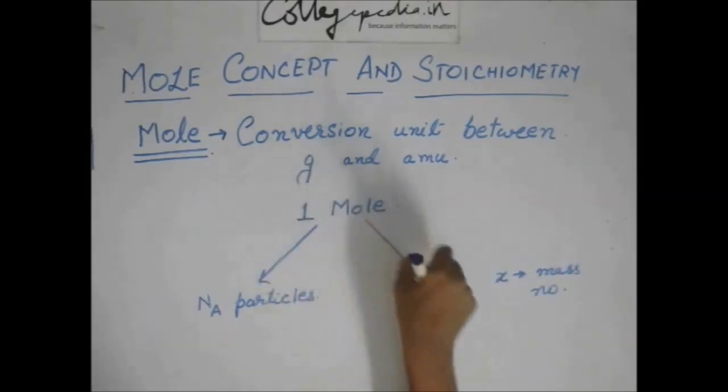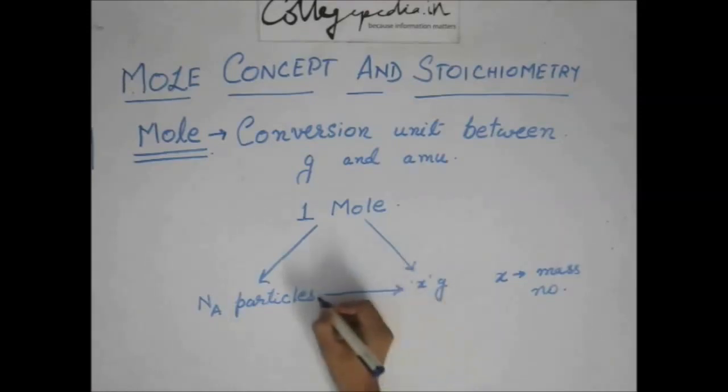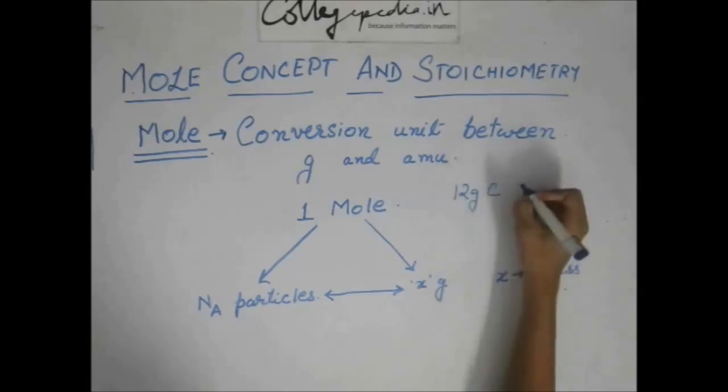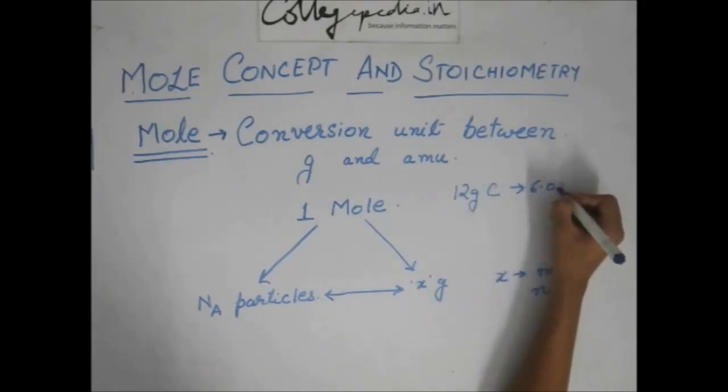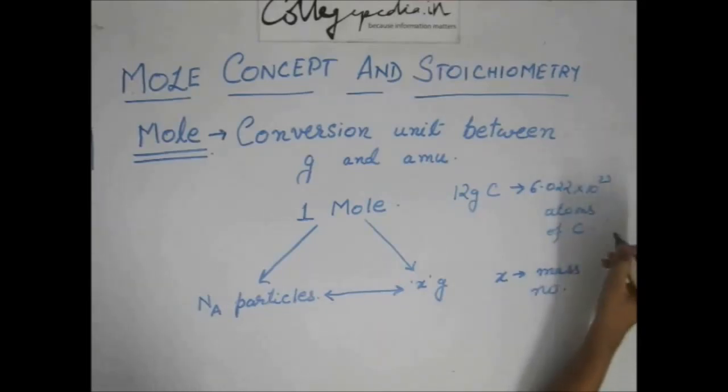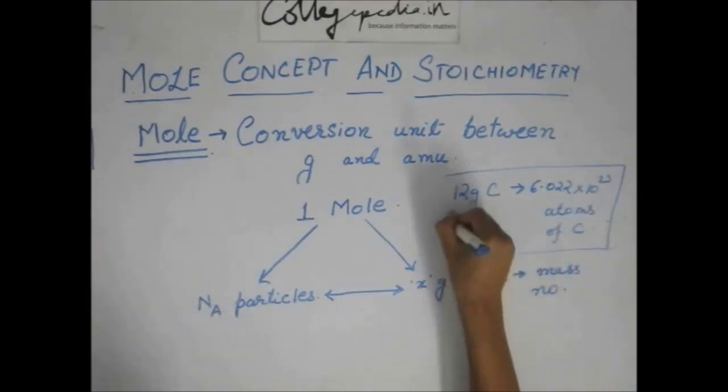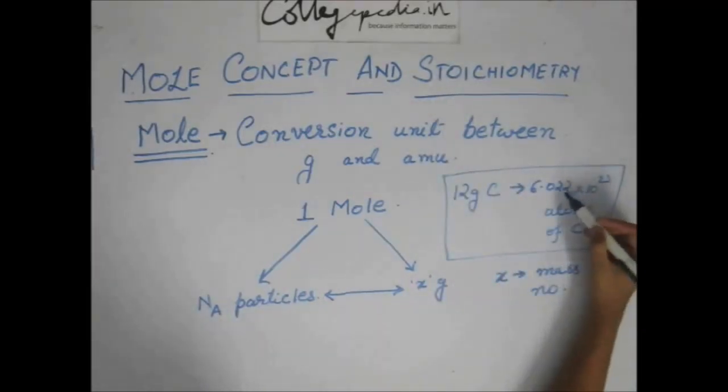And so, since this is equal to both then these two are also equal. So, we can say that 12 gram of carbon, since 12 is the mass number of carbon, this will contain 6.022 into 10 to the power 23 atoms of carbon. So, that is why this quantity, this very standard result has led to the formation of this quantity.